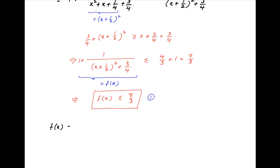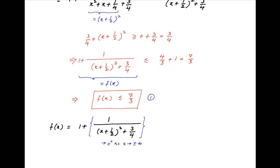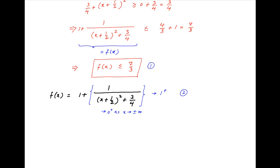Now f(x) = 1 + 1/((x + 1/2)² + 3/4) as derived above. As x tends to plus or minus infinity, the denominator of the second term tends to infinity from the positive side, and therefore the second term tends to 0 from the positive side, and therefore f(x) tends to 1 from the positive side as x → ±∞. Let's call this Result 2.